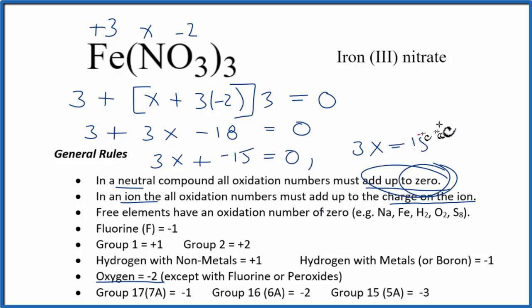And then way over here, X equals five. We'll call it a positive five. And that's going to be the oxidation number here on our nitrogen.